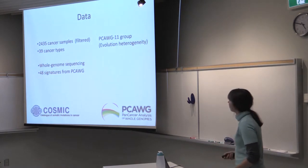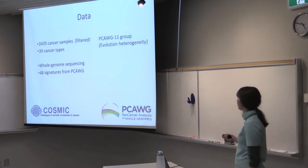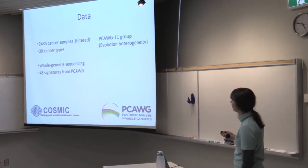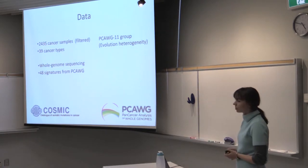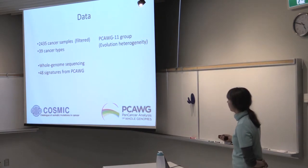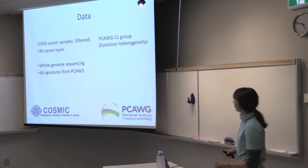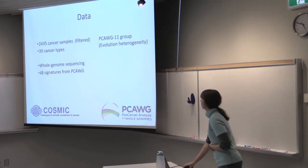And we'll be applying the method to the same dataset as Jeff has talked about before. This is a PCAWG dataset, and we have selected 2,400 cancer samples from 39 cancer types. And the PCAWG provided us a set of 48 signatures, which we have fitted to the samples, which is a little bit bigger than the public set.